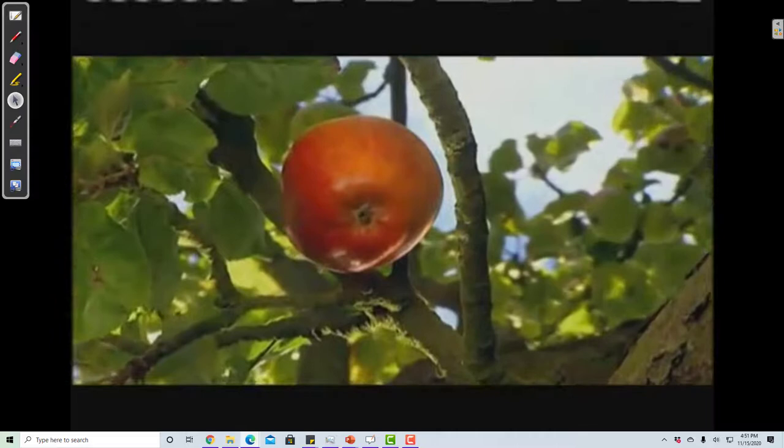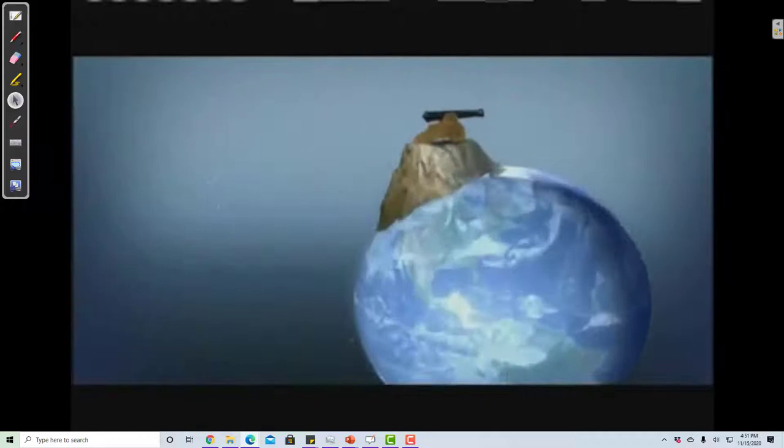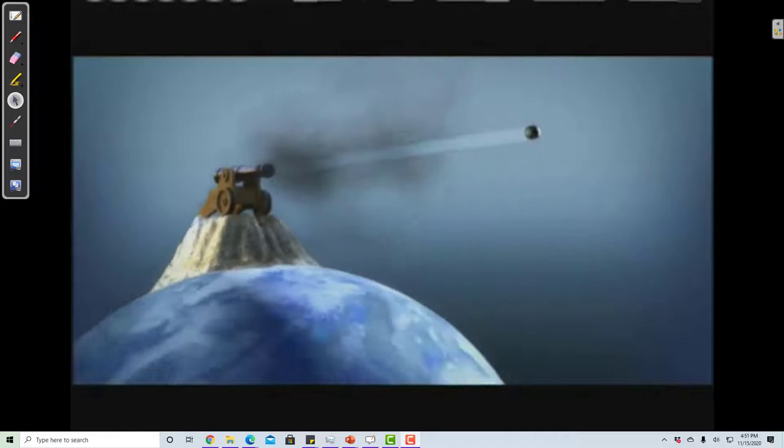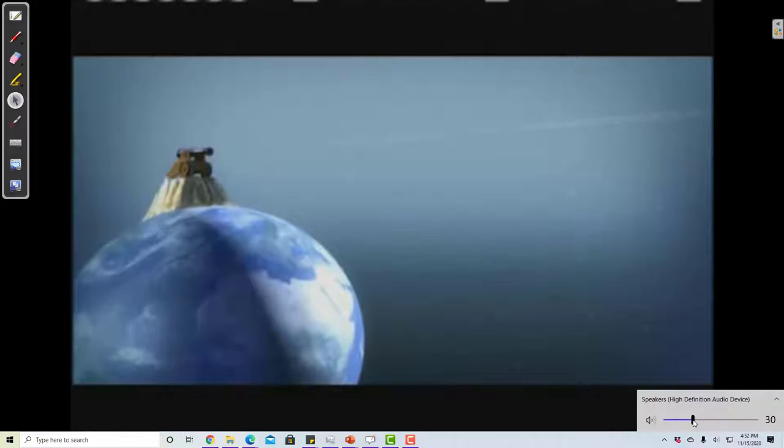To show how gravity works on Earth and in the skies, Newton designed a thought experiment. He imagined firing a cannon from the top of an extremely tall mountain. From his first law of motion, he knew the cannonball would travel in a straight line at a constant speed forever.